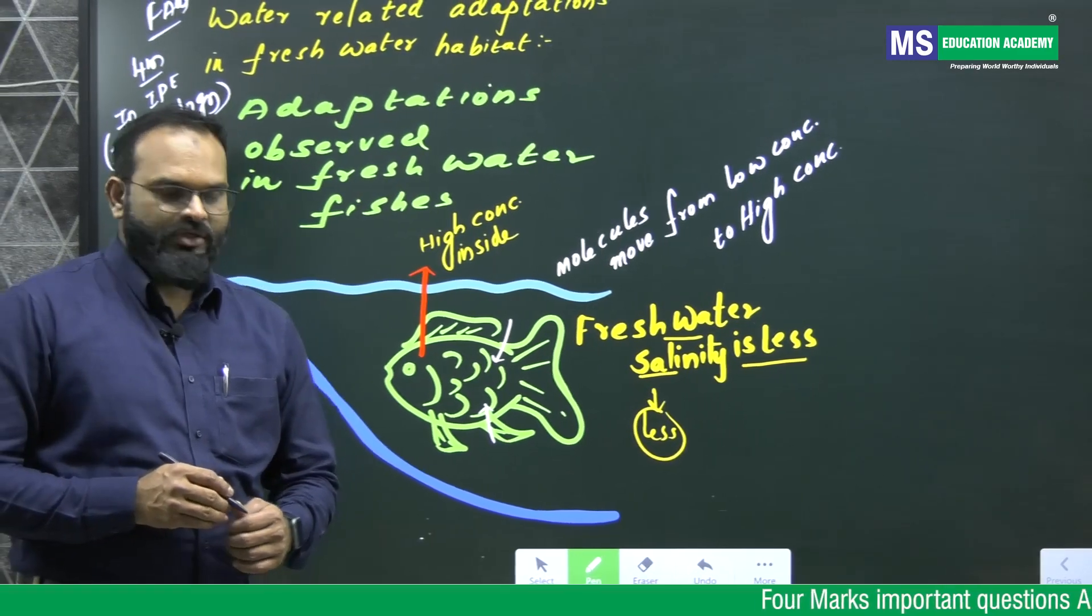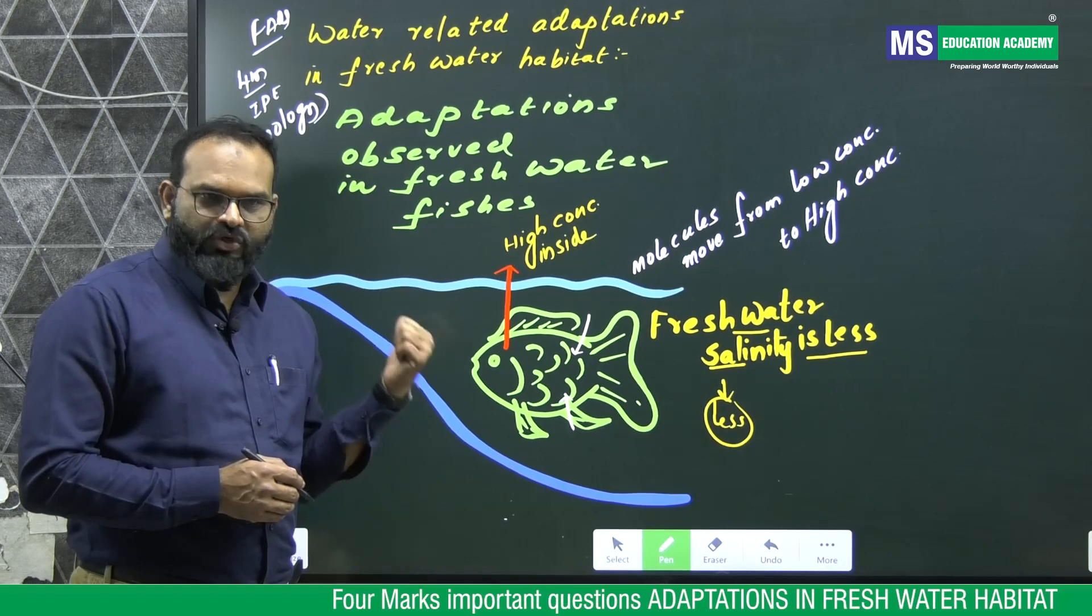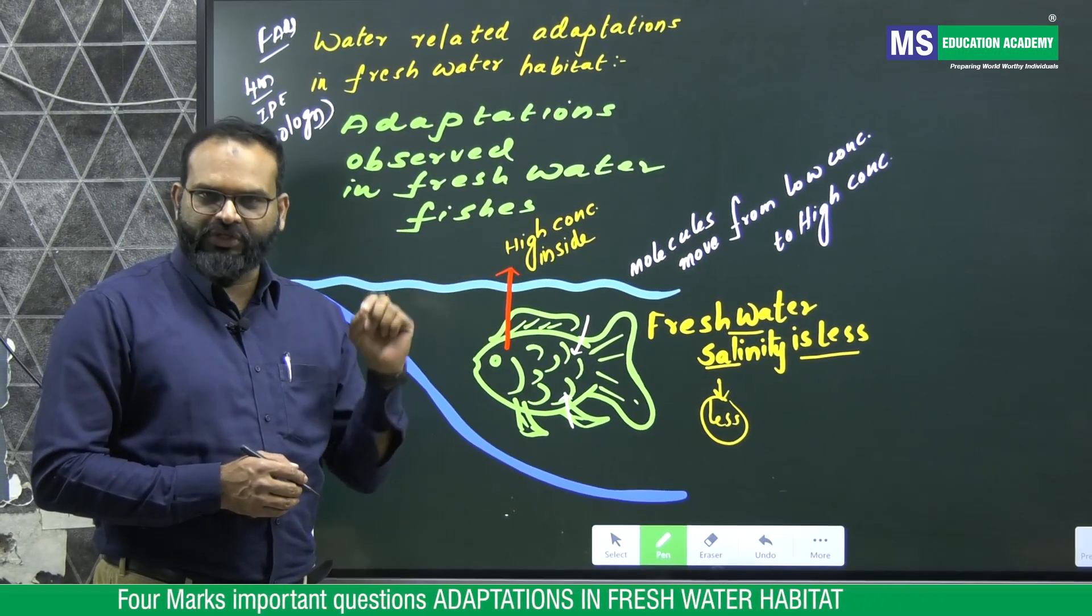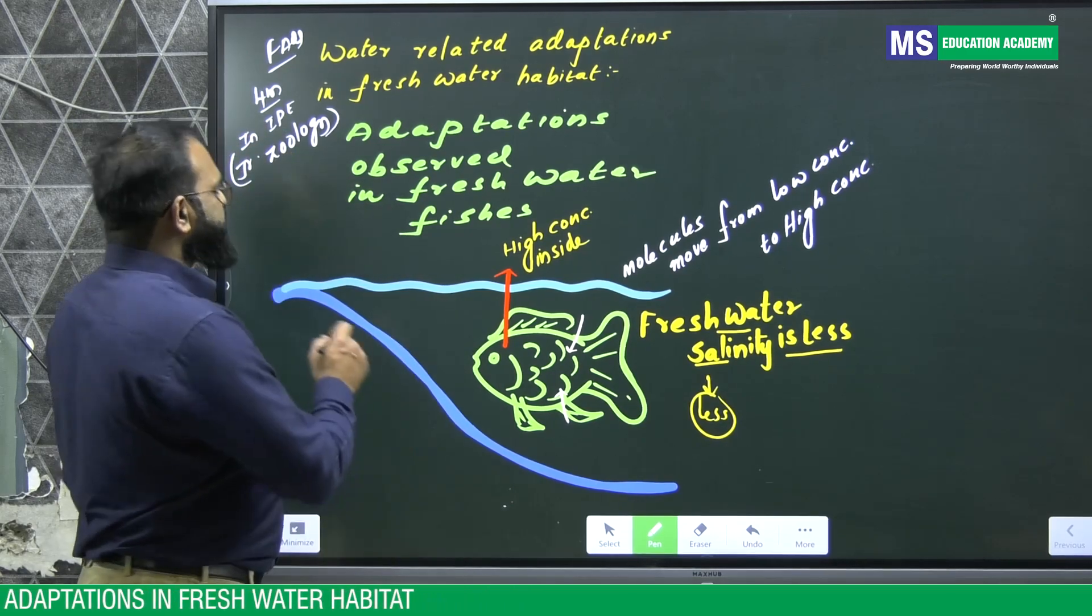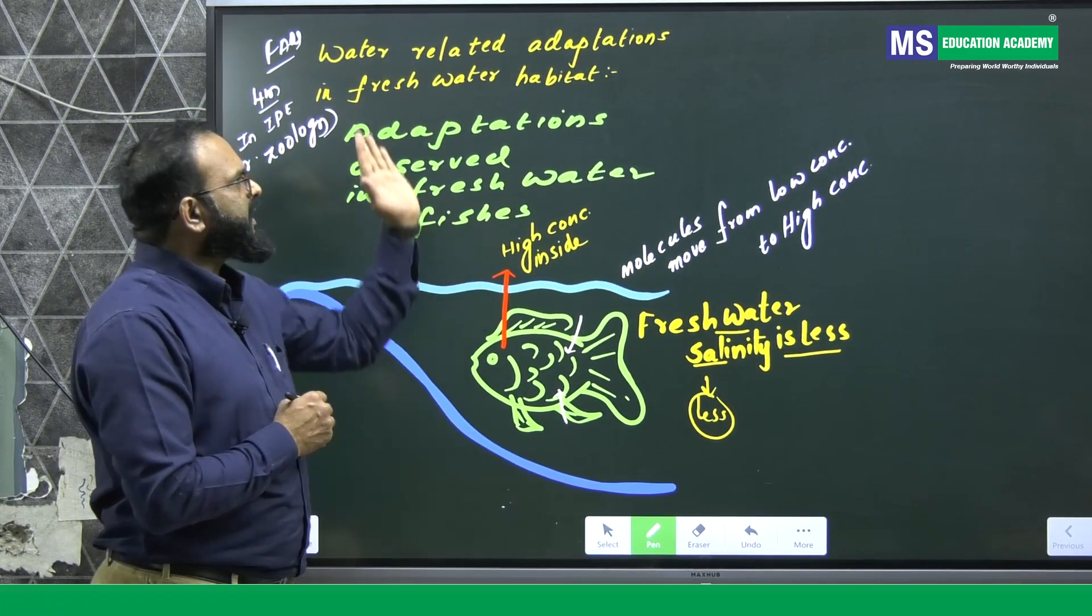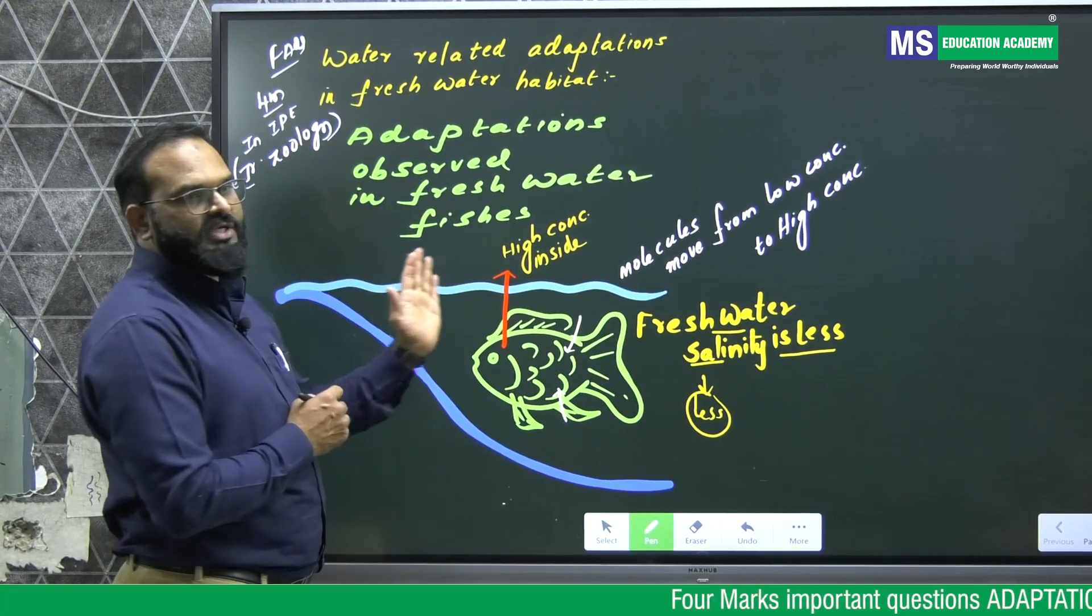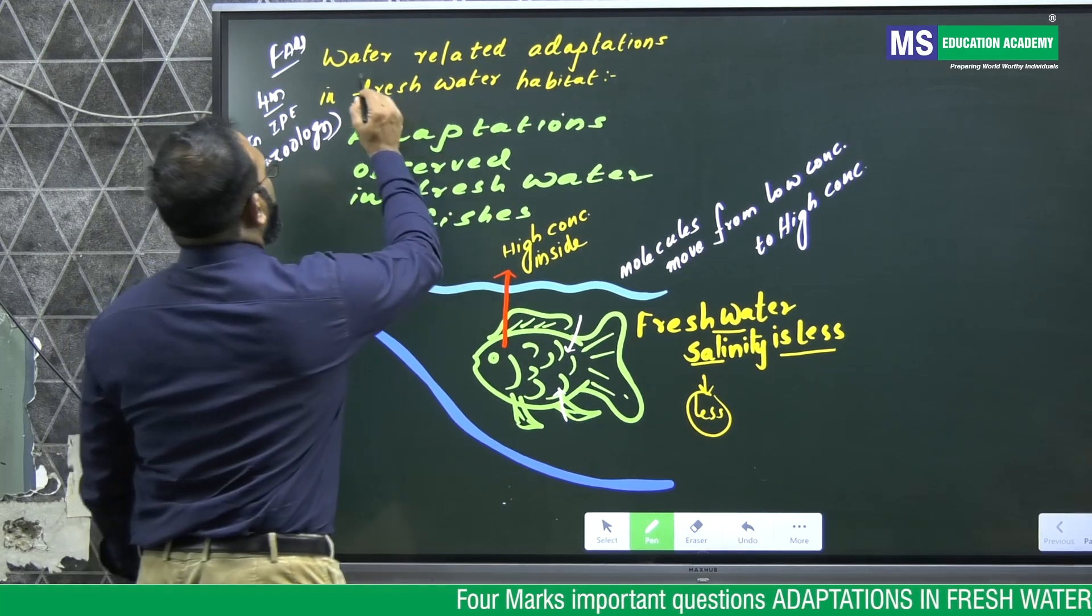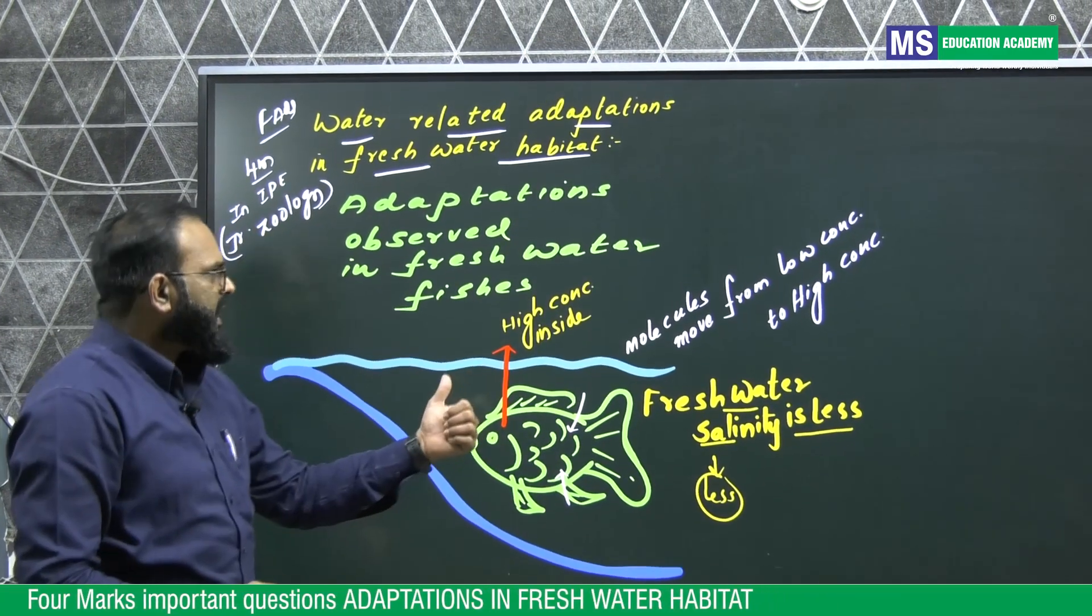Hello students, today let us study one of the important four marks questions frequently asked in IPE junior inter zoology: osmoregulatory problems faced by freshwater fishes or freshwater animals. Water-related adaptations in freshwater habitat.